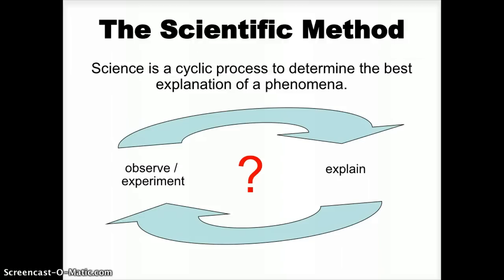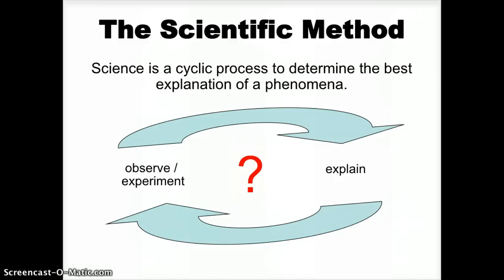Science is a cyclic process of hypothesis development and testing. The key word is process. The models and theories are not fixed — they change as new knowledge is obtained.